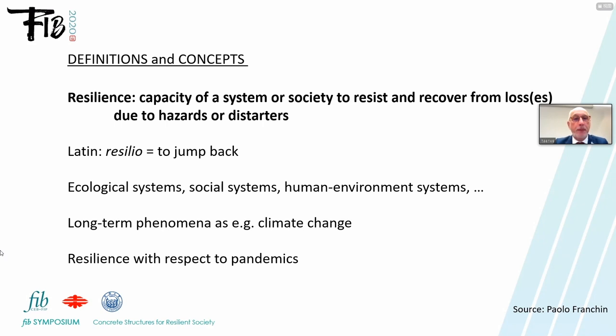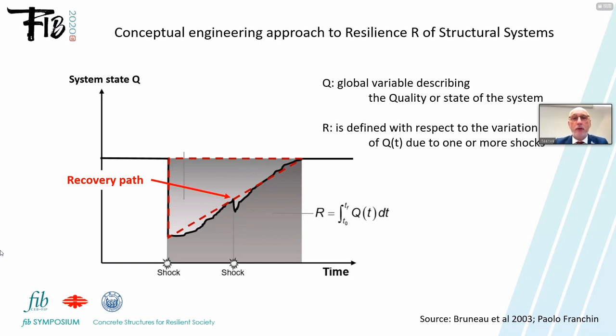Here you see a conceptual engineering approach to resilience, denoted by R, the resilience of structural systems. Along the vertical axis you have a system state variable Q, describing the quality of a system in a general sense, and here you have the time axis. At a certain moment in time, a shock occurs, where you see a loss in quality. After this event occurs, the quality gradually comes back to the original level again. The dashed red line you see here is called the recovery path.